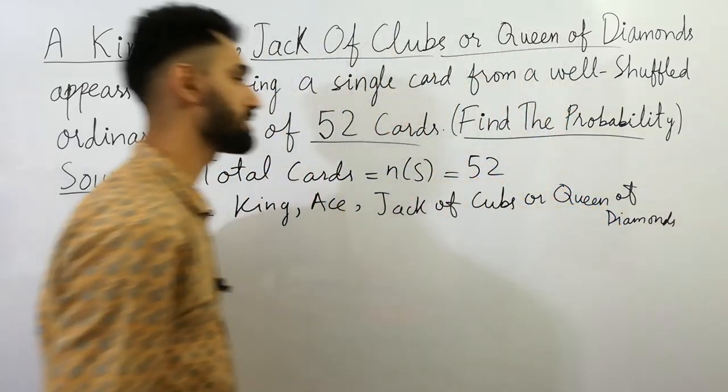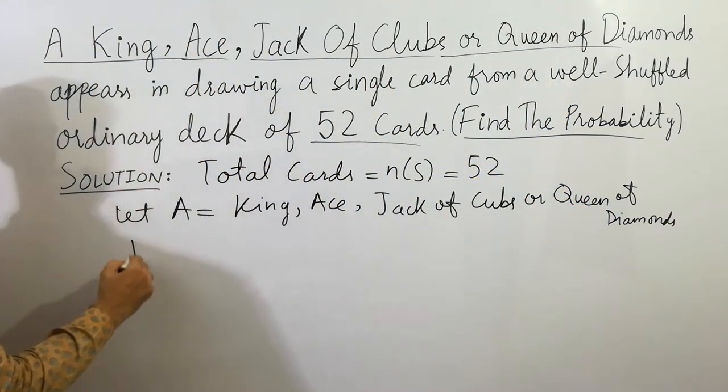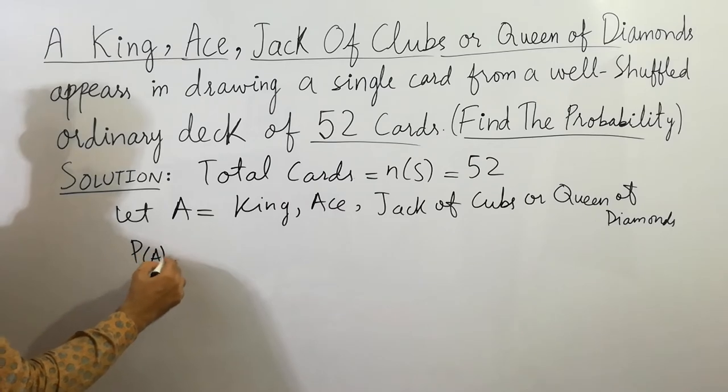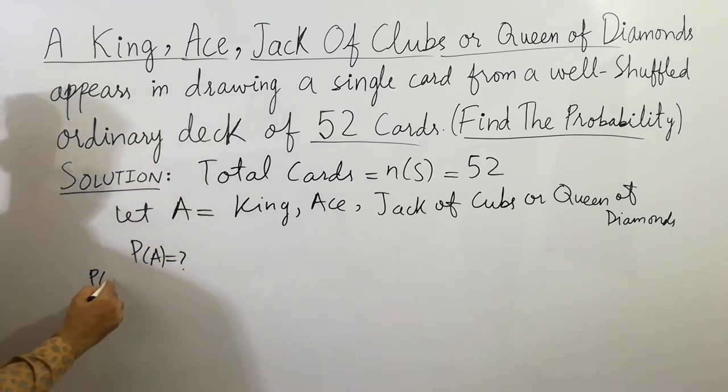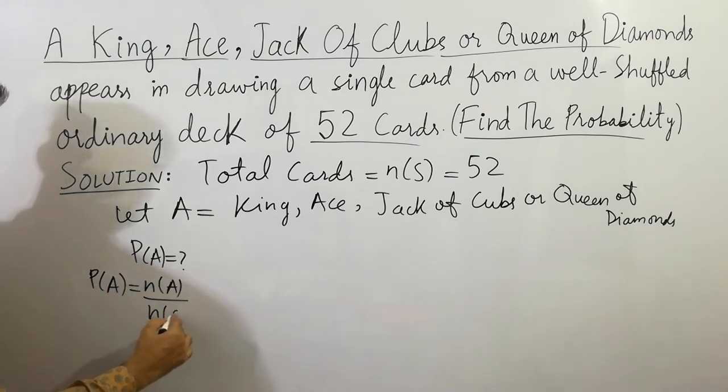You have to find probability of A. What is the probability of A? You know that probability of A is always equal to number in A divided by number in sample space.